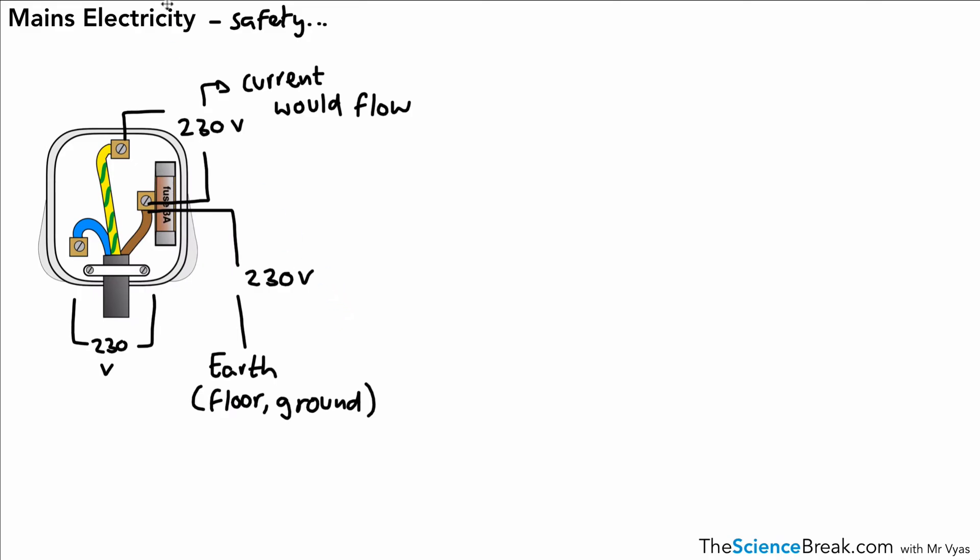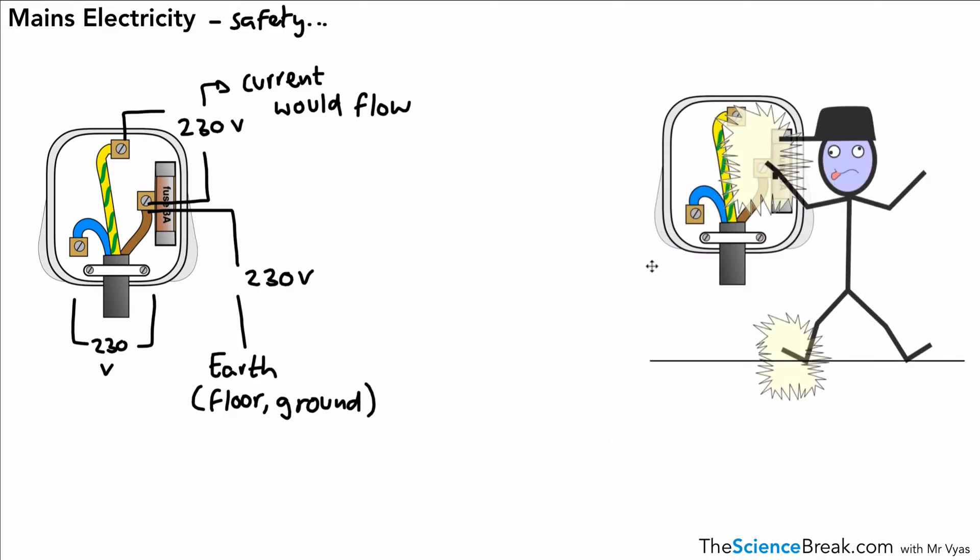And why do we need to know and remember that? Well, if we have, for any reason, the live wire connected to the ground through a person, we've got the ground at 0 volts, we've got the live wire at 230 volts. So that means the potential difference between the live and the earth is going to be 230 volts. Connected by a person, in this example here, that's going to cause an electric shock.